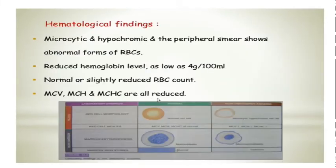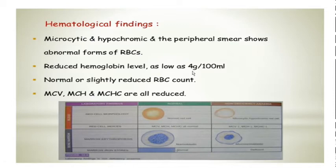Talking about the hematological findings in iron deficiency anemia: on a peripheral smear you will get a whole battery of tests. There are certain RBC indices, and then you have a peripheral smear where you will find microcytic and hypochromic RBCs. There will be a reduced hemoglobin level — can be as low as 4 grams — indicating the severity of the anemia. RBC numbers are reduced. MCV, MCH, MCHC — all are reduced.